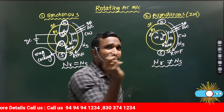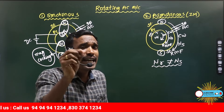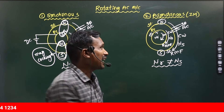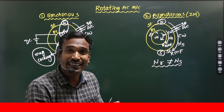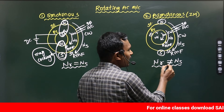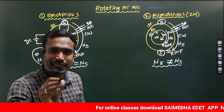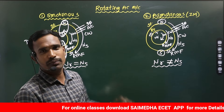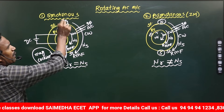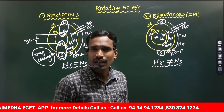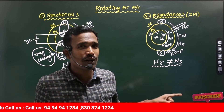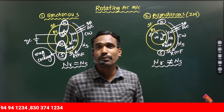Due to mechanical inertia, air friction, and bearing friction, the rotor tries to catch the Synchronous speed but is unable to reach it. That is why the rotor speed is not equal to Synchronous speed in the Induction machine. The machine in which the rotor speed equals Synchronous speed is called a Synchronous machine. The machine in which the rotor speed is not equal to Synchronous speed is called an Induction machine.